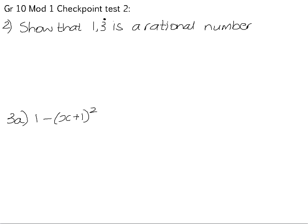show that 1.3 recurring is a rational number, so we need to convert it into a fraction. So we start off by setting up our equations. Let x equal 1.3 recurring. There is one digit here that recurs, so we multiply both sides of the equation by 10.